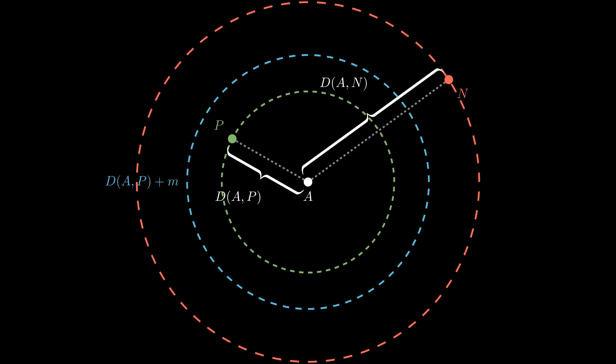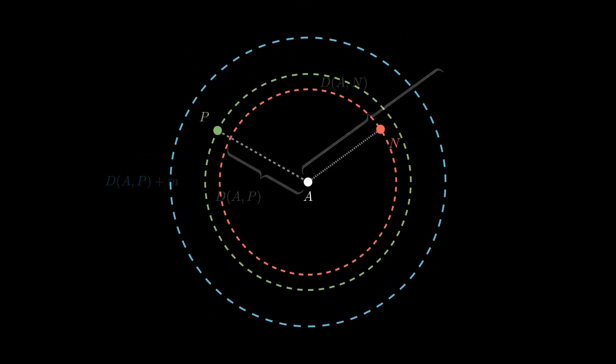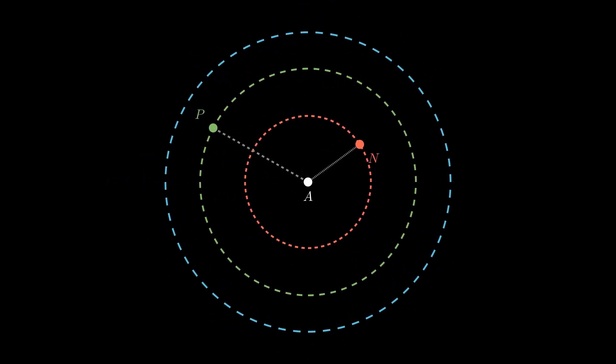Here you can see that this condition is satisfied since the negative is far beyond the margin. This means that in this case the loss will be zero, which is not very useful to train the network. In this new configuration, the negative is actually closer to the anchor than the positive, so the loss should push the network to bring the positive closer to the anchor and the negative further away.